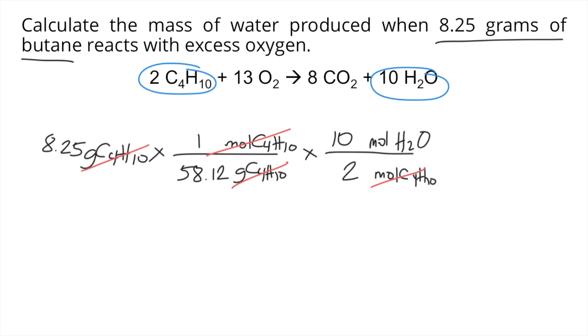And finally, since the problem is asking for the mass of water, we will convert the moles of H2O to grams of H2O. We will use this time the molar mass of water. So for every 1 mole of water, if you compute the molar mass, that would be 18.016 grams of water. So the moles of water would cancel out.